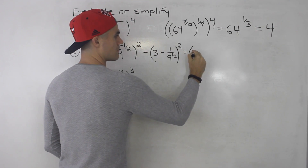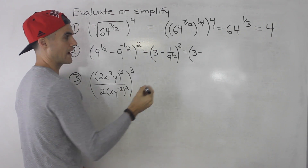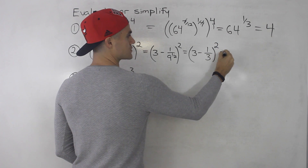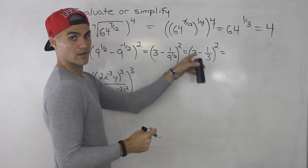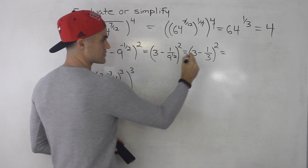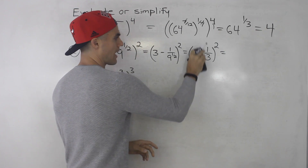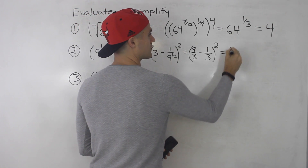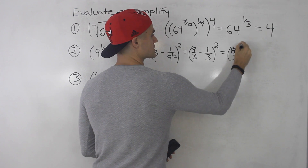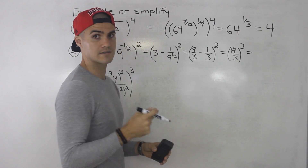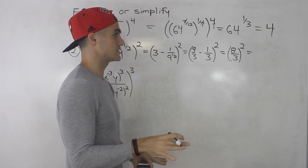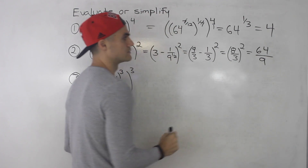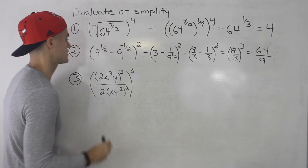So this is 3 minus 1 over 9 to the power of a half, which is 1 over 3, and that's all to the power of 2. We can get a common denominator and subtract these two fractions — 3 is like 9 over 3, so 9 minus 1 gives us 8 over 3, all to the power of 2. Distributing the exponent: 8 to the power of 2 is 64, and 3 to the power of 2 is 9. So 64 over 9 is the answer for number 2.